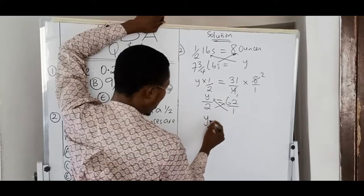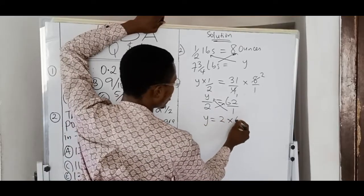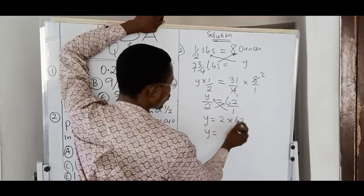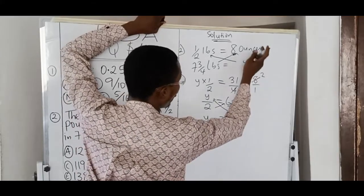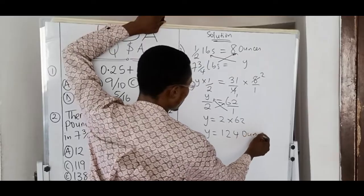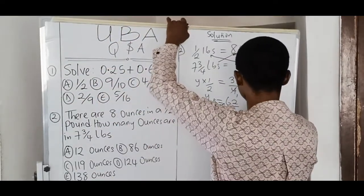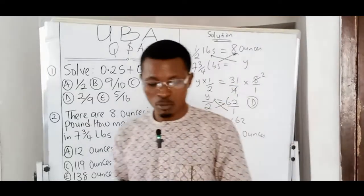So, Y times one gives us Y. Then, two times 62. And that Y is what now? Two times two, four. Two times six, twelve. One hundred and twenty-four ounces. And that is given by option D. Option D gives the correct answer to number two.